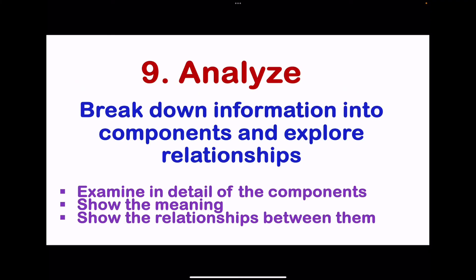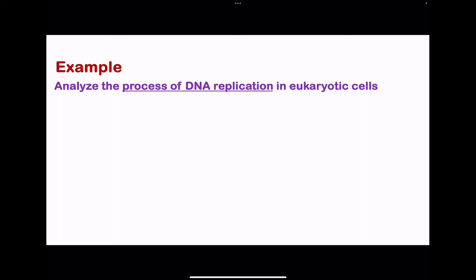The next command word is analyze. It means break down information into components and explore relationships. The example we have here is analyze the process of DNA replication in eukaryotic cells. Here I could say DNA replication in eukaryotic cells is a complex and highly regulated process involving initiation, elongation, and termination phases. Enzymes like DNA polymerase and helicases coordinate. The DNA double helix is unwound and then the synthesis of new strands and perforating mechanisms occur. This ensures efficient transfer of genetic information during cell division.